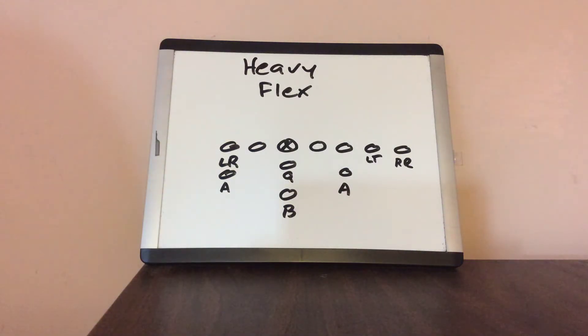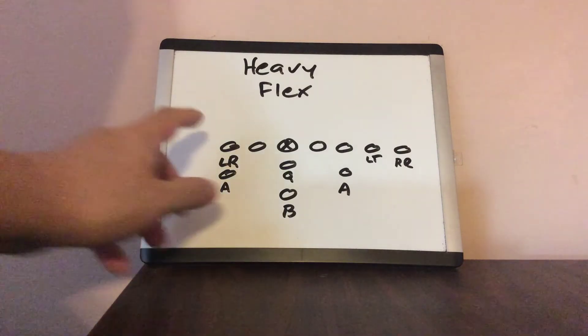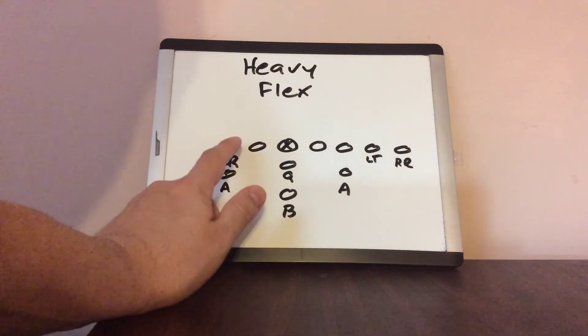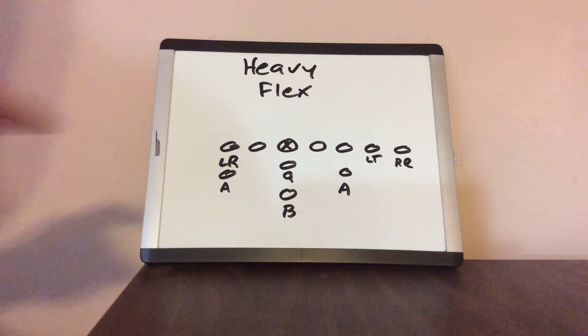Coaches, you have seen this formation from Army and to some extent from Navy in the last year. It's called Heavy Flex. What Heavy Flex is: the left receiver moves over and becomes the left tackle. He'll align three and a half feet away from the guard with his inside hand at the heels of the center.